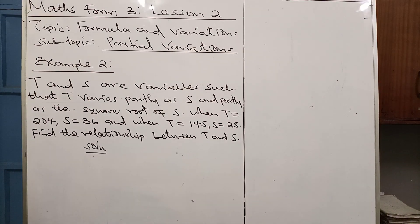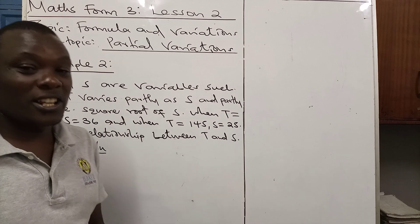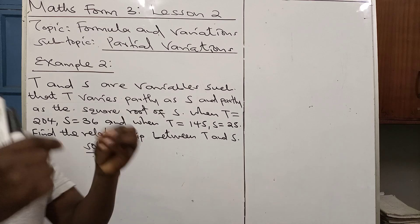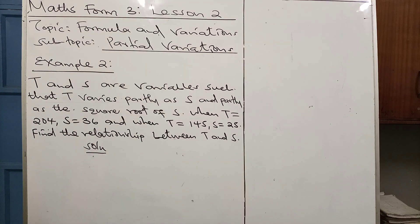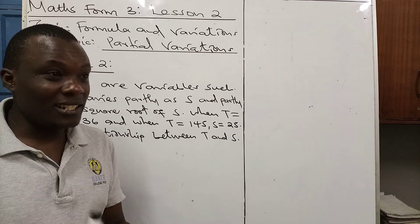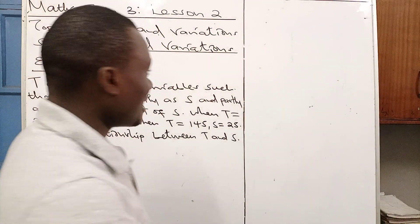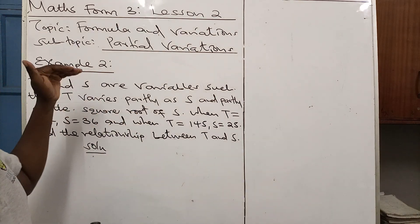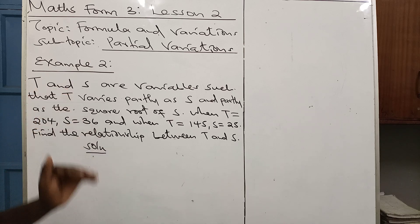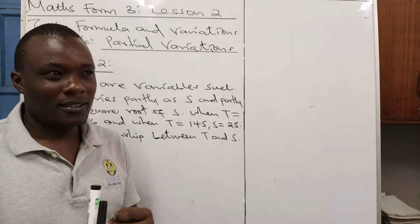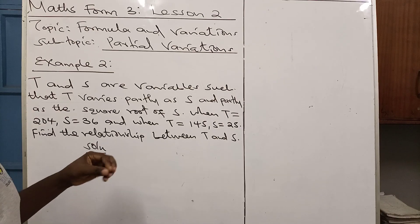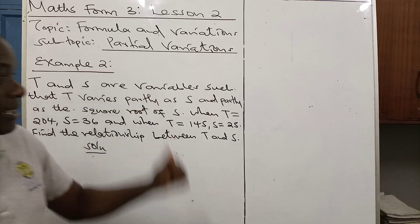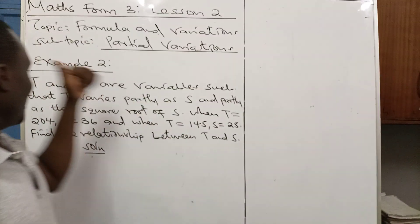Remember we said that under Partial Variations there are two statements that students should understand. The first being Partly Constant and Partly Varies as — that's the first statement which we looked at in our first example. Today we are looking at the second statement that students should understand under Partial Variations, and that is Varies Partly as and Partly Varies as.